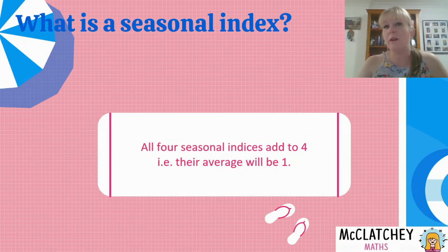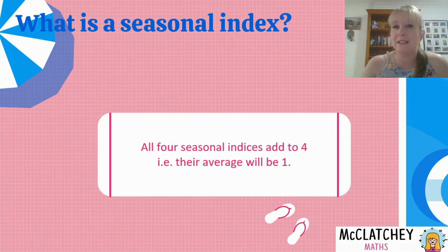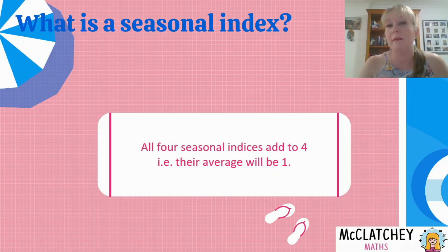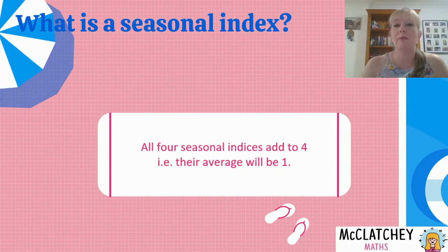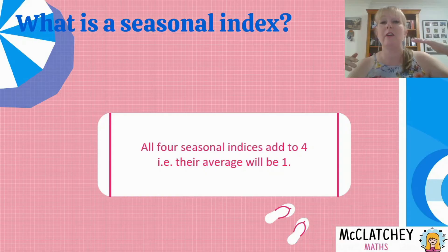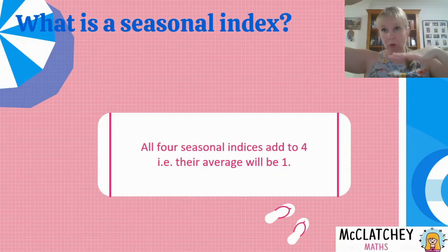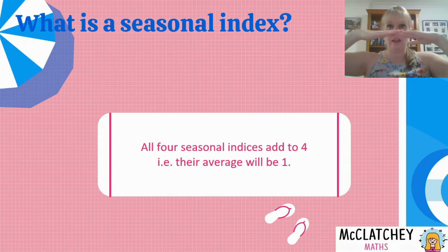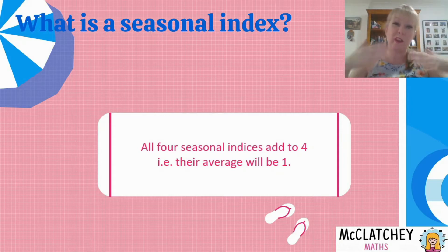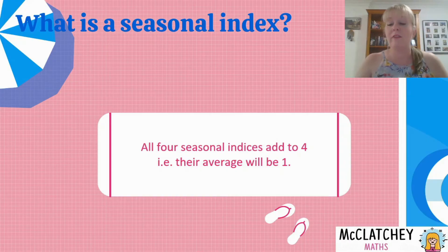Now all four seasonal indices — spring, summer, autumn, and winter — will all add to the number 4, because their average is going to be 1, or 100%. So we're basically measuring this baseline of 100% and all of our seasons are above or below that 100%, and they will all average out to 100%. We're comparing each of those seasons to that baseline of 100.